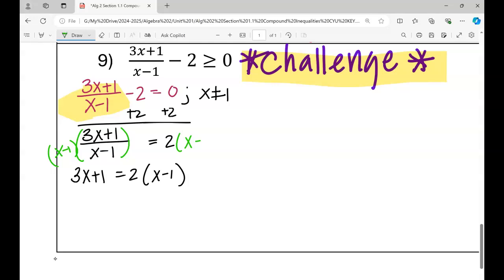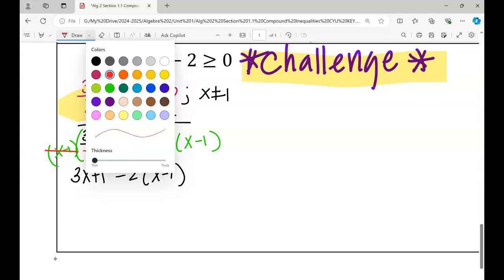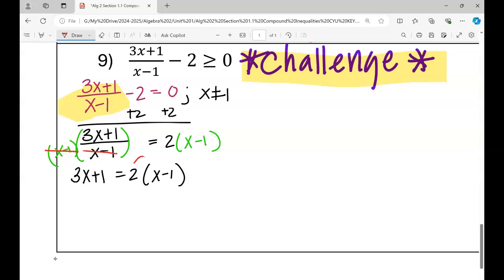What you multiply to one side, you multiply to the other. That's why we now have 3x plus 1, because this right here will erase each other out since they are canceling. Then on the right side, we have the quantity of x minus 1 times 2. So on the right side is 2x minus 2. On the left side, we just have the numerator, which is 3x plus 1.